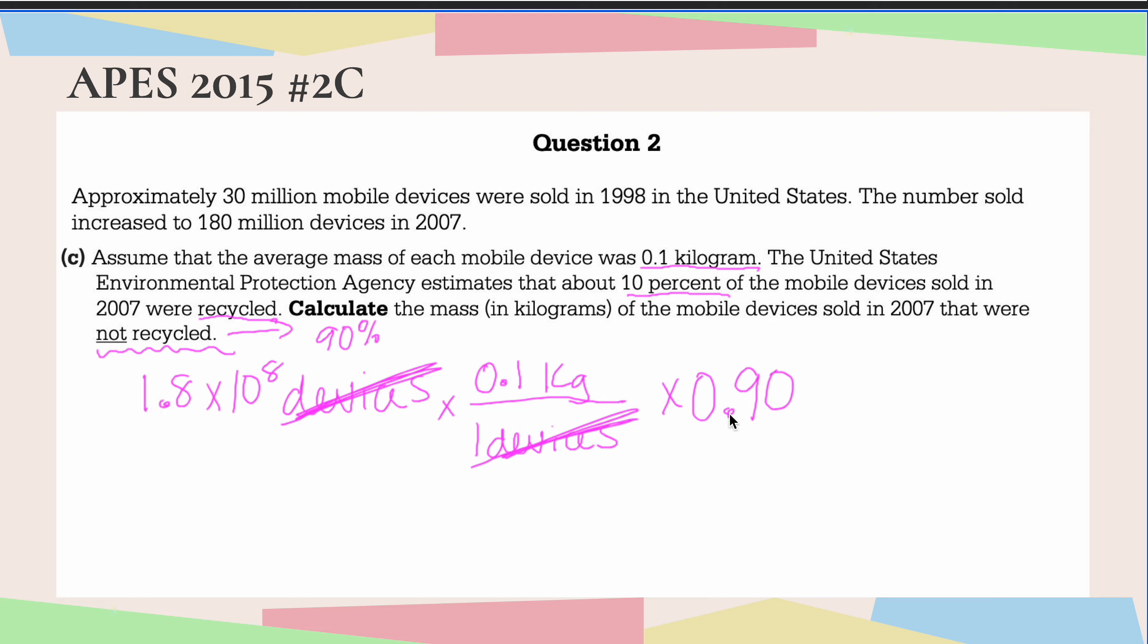Now I'm going to multiply this through. So I went ahead and plugged this into my calculator, which is permitted, and I got 1.62 times 10 to the 7th kilograms. So that would be the mass in kilograms of the mobile devices sold in 2007 that were not recycled.